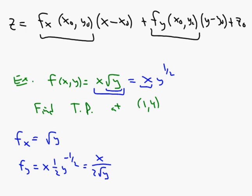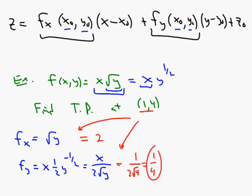Now we have our two partial derivatives, but we need to plug in the point we're interested in. Taking the point 1 comma 4 and substituting: for f sub x we get the square root of 4, which is 2. For f sub y we get 1 over 2 times the square root of 4, or one-fourth.